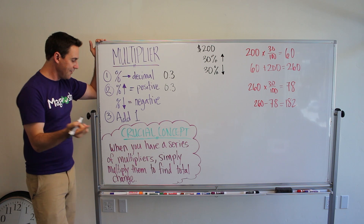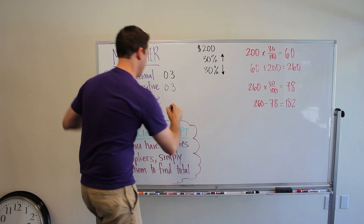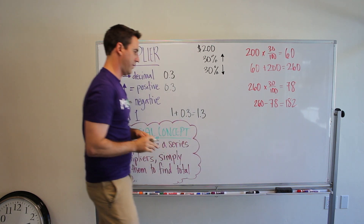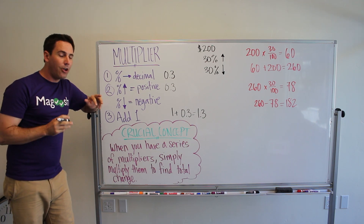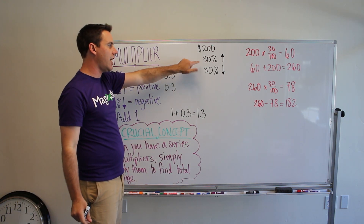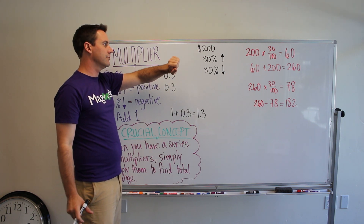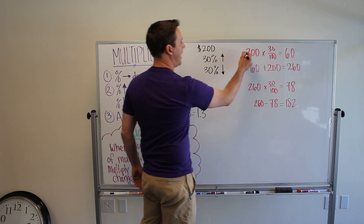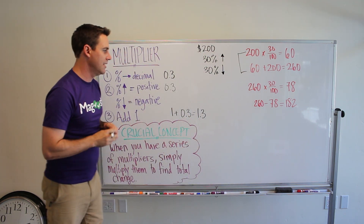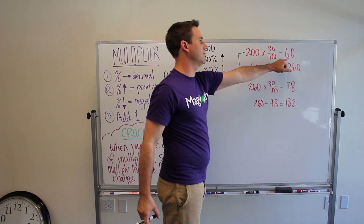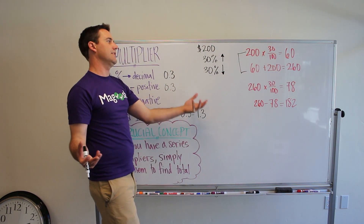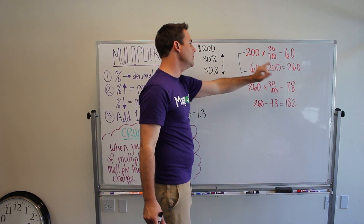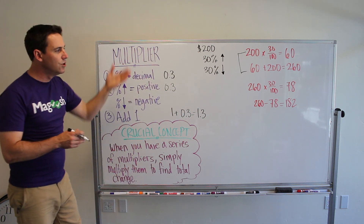The final step is to add 1. So 1 plus 0.3 equals 1.3 — our multiplier is 1.3. If we wanted to find the new price from $200, we would multiply 200 by 1.3. What this multiplier does is combine two steps: the 0.3 tells us what 30% of $200 is (which is $60), and the 1 represents 100% of $200 (that $200 itself). So 1.3 times 200 gives us 260.